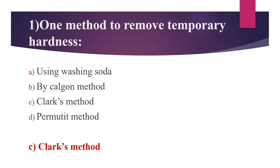Looking at the other options — Option A: Using Washing Soda, Option B: By Calgon method, Option D: Permutit method — all of these are methods used to remove permanent hardness. Then Second Question.